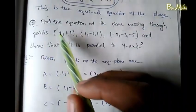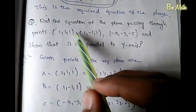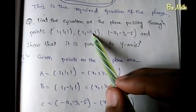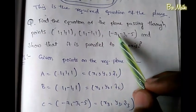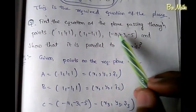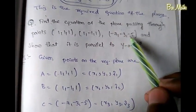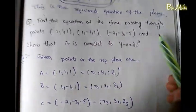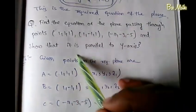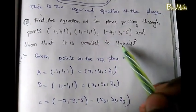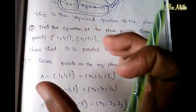Find the equation of the plane passing through the points (1, 1, 1), (1, -1, 1), (-7, -3, -5) and show that it is parallel to the y-axis.